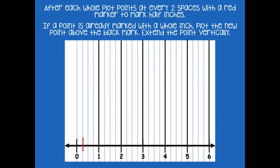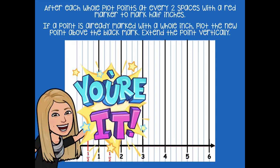So one space, two spaces — one half. Then after each whole: one space, two spaces — one half. You would go to two, move two spaces and mark one half; go to three, move two spaces and mark one half. Do that for all from zero to six, then click play when you're ready for the next step.